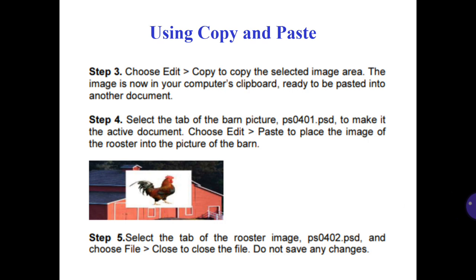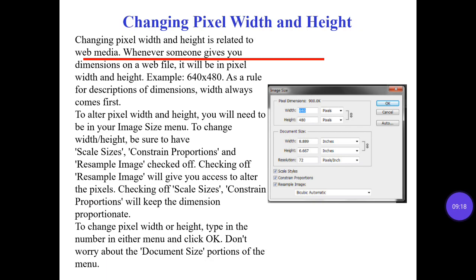Step number 4: select the tab of the barn picture to make it the active document. Choose Edit, then Paste to place the image of the Rooster into the picture of the barn. You can see this in the picture. Step number 5: select the tab of the Rooster image and choose File, then Close to close the file. Don't save any changes.